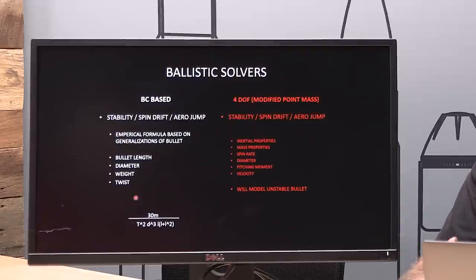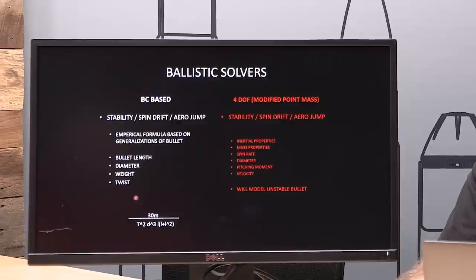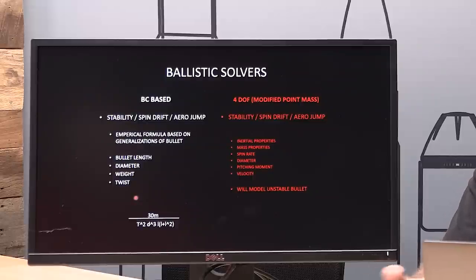What Fordhoff does when it calculates gyroscopic stability, spin drift, or aerodynamic jump: it takes the bullet model, the inertial properties, the mass properties, the spin rate, the diameter, the pitching moment, and the velocity, and calculates those in the equation that solves for gyroscopic stability. Totally different. The Miller stability formula had a rule of thumb of 1.4 so there was some fudge factor. You don't have to have fudge factor if you actually solve the equation appropriately.